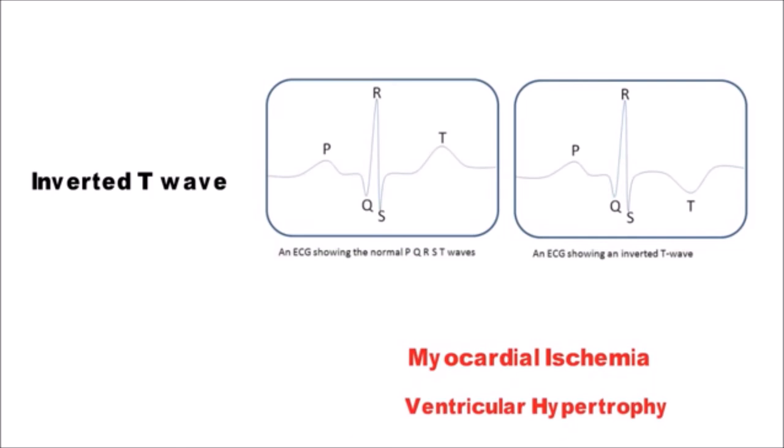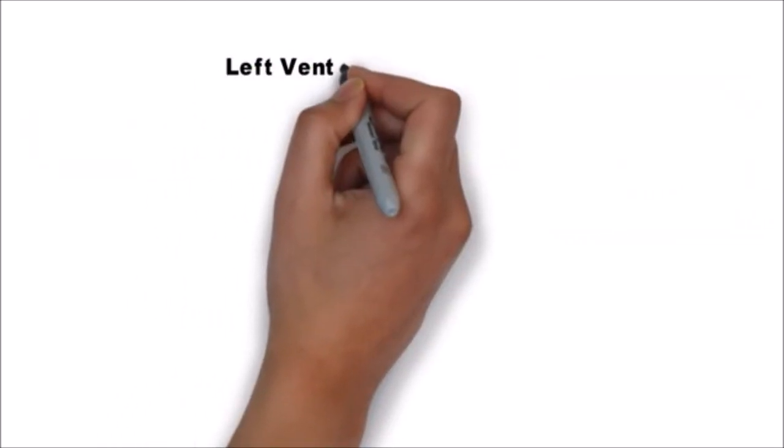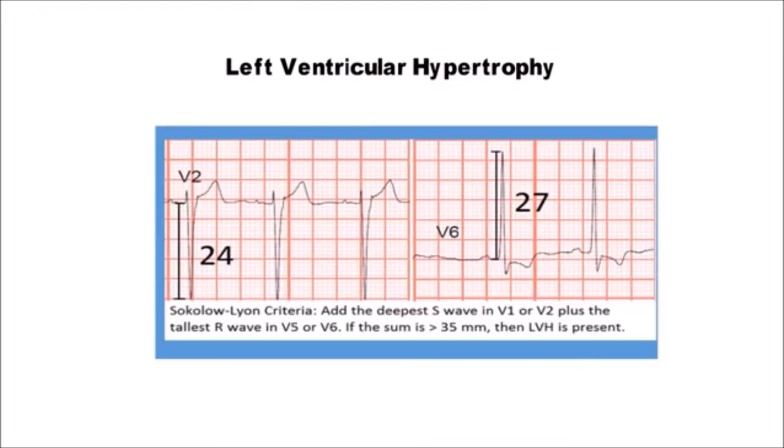Now let's discuss about how the ECG looks like in hypertrophy. In left ventricular hypertrophy, add deepest S-wave in V1 or V2 plus tallest R-wave in V5 or V6. If more than 35 mm, then LVH is present.